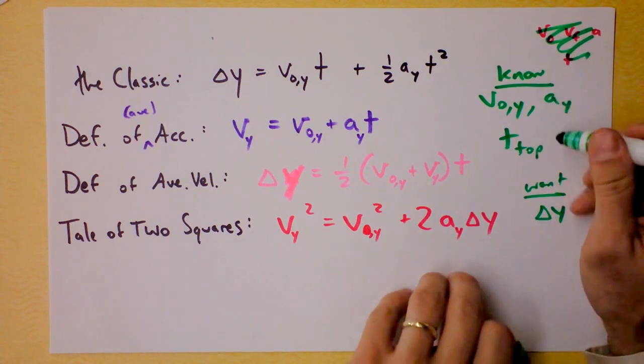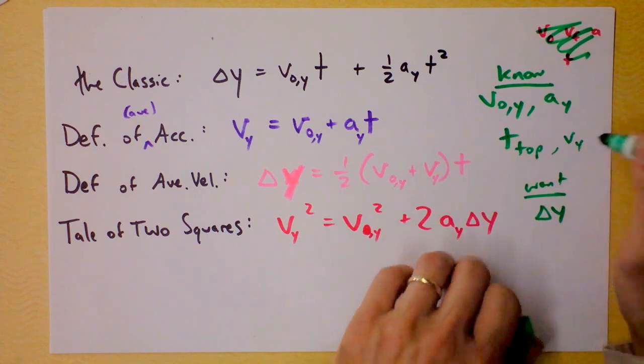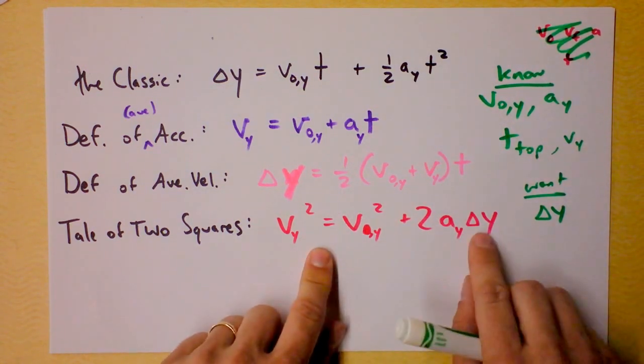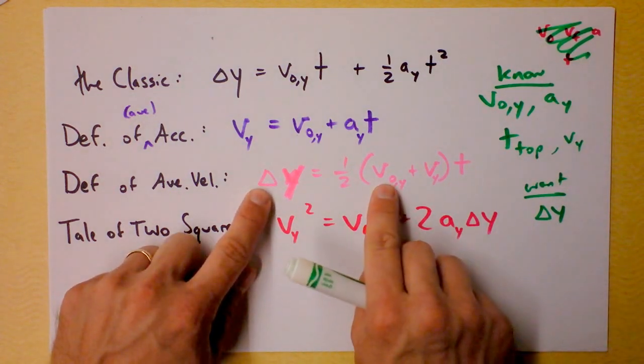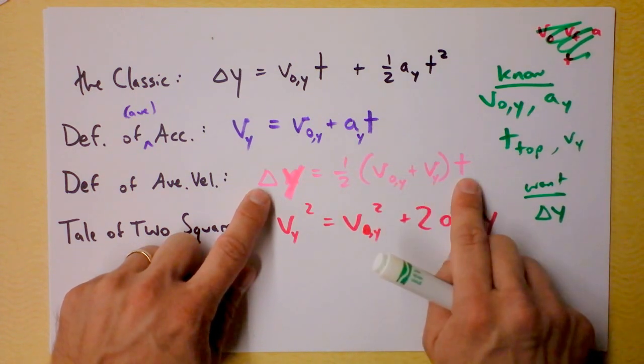You know what else we know? We actually also know the final velocity in the y direction. We could just call it vy in that case. So we could use this equation right here, because it's got delta y and the other stuff. We could use this equation right here, because it's got delta y, and it's got the initial velocity in y and the final velocity in y and the time.